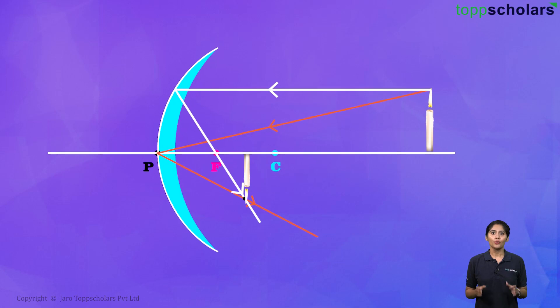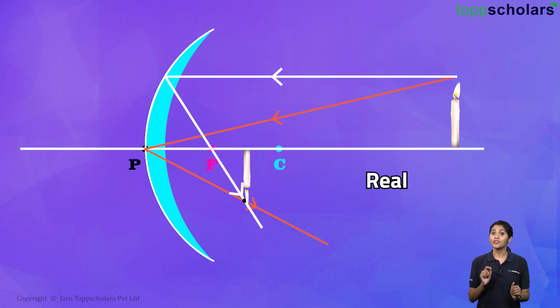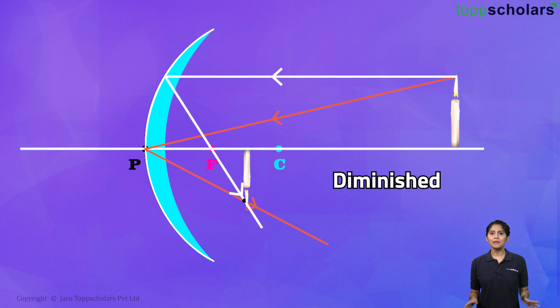The image would look somewhat like this. The image between F and C, it is inverted and real because we can capture it on the screen. Any image that can be captured on the screen is called real. As you can see, this image is diminished in nature.